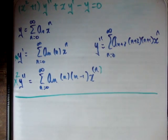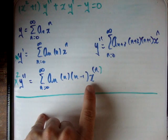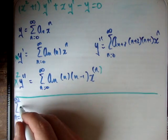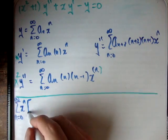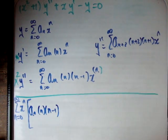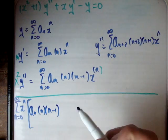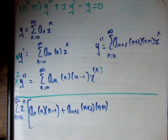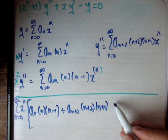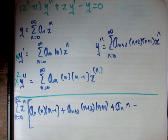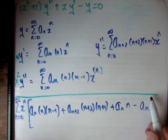The point to note is that each of those begins at n equals 0, goes to n equals infinity, and each of them has the same power, namely x to the n. So I'm going to take out x to the n and the sum itself. Then: x squared times y double prime gives a sub n times n times n minus 1; adding y double prime gives a sub n plus 2 times n plus 2 times n plus 1; adding x times y prime gives plus a sub n times n; and subtracting the y term gives minus a sub n. That equals 0.